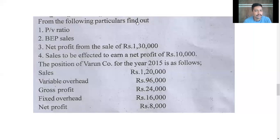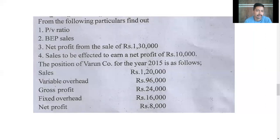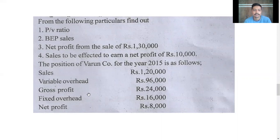From the following particulars, find out: number 1, PV ratio; number 2, BEP sales; number 3, net profit from the sale of Rs. 1,30,000 — that means we need to identify the desired net profit; and number 4, sales to be affected to earn a net profit of Rs. 10,000.